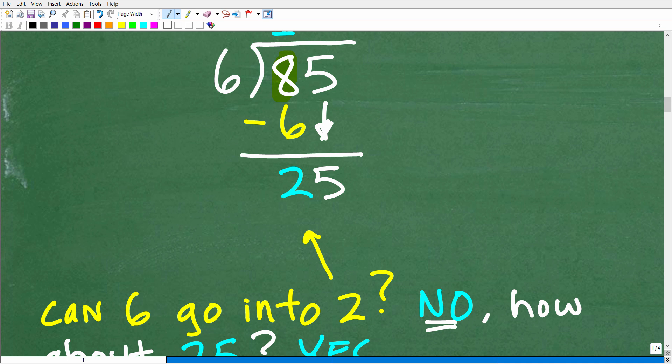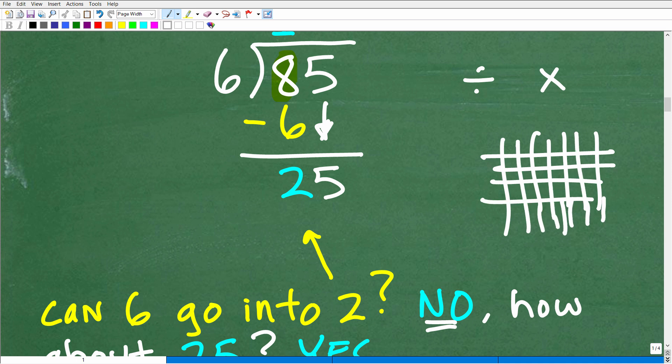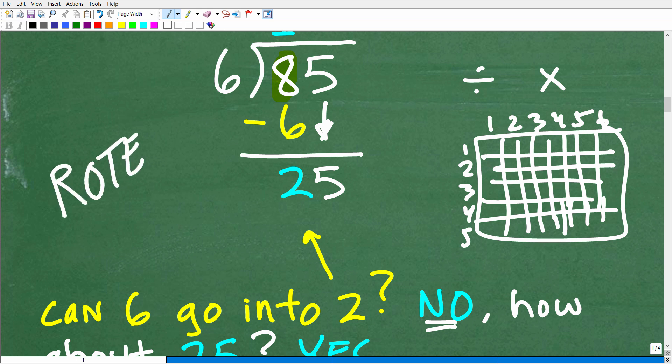How many times can 6 go into 25? The answer is 4. So in order to know division, you've got to know its inverse operation, which is multiplication. That's why when you learn division, you really have to first master those times tables. And how do you master the times tables? You know, we're talking about 1, 2, 3, 4, 5, 6. Any parents out there, I'm here to tell you there's nothing wrong with good old-fashioned rote brute force learning.